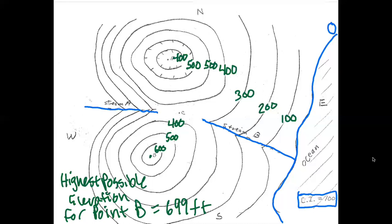Another typical question: if we had point X right here, what's its elevation? You've got a 200 and a 300 contour line, and it's about halfway between them — so the elevation is about 250 feet. Those are the kinds of questions you might get.